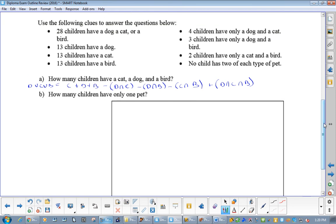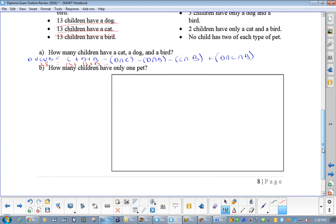It says 28 have a dog, a cat or a bird, so that goes there. 13 have a dog, 13 have a cat, and 13 have a bird. 4 have only a dog and a cat, so my dog and cat is here. So, we have dog, we have cat, and we have bird, and we have an X there.